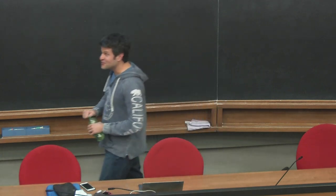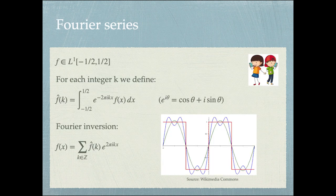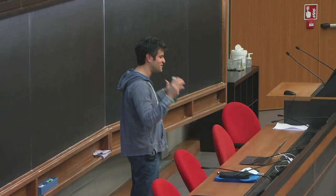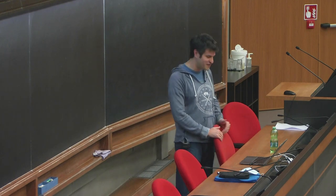The second part of the talk is to discuss a little bit about oscillations. When you talk about oscillations, you want to talk about Fourier. Jean-Baptiste Joseph Fourier is a French mathematician. He has his name on the Eiffel Tower — I was illuminated the first time I went to Paris by how the French pay tribute to their scientists: 18 names on each side, 72 names of scientists total. There are 21 names of mathematicians on the Eiffel Tower, and Fourier is one of these.